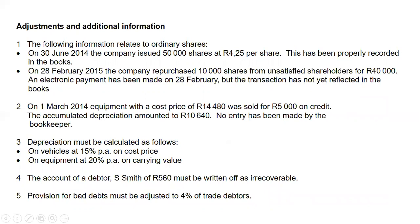The first adjustment relates to ordinary shares. On 30 June 2014 — which is four months into our financial year starting 1 March 2014 — the company issued 50,000 shares at $4.25 per share. This is supposed to go to ordinary share capital, and the adjustment continues with further details.